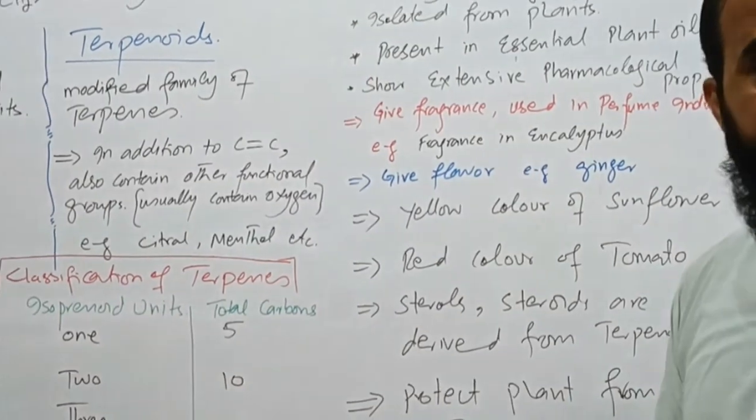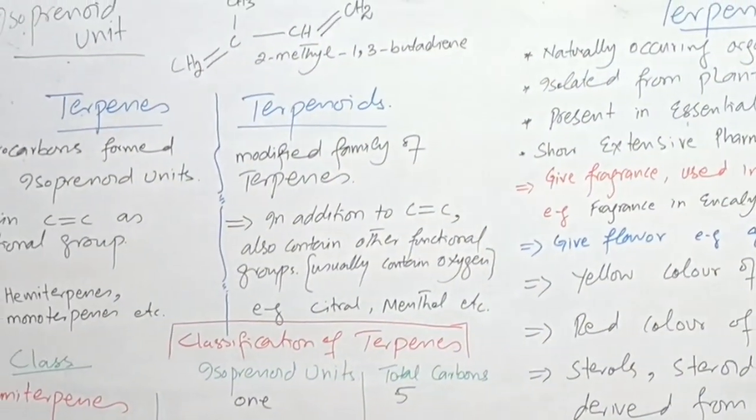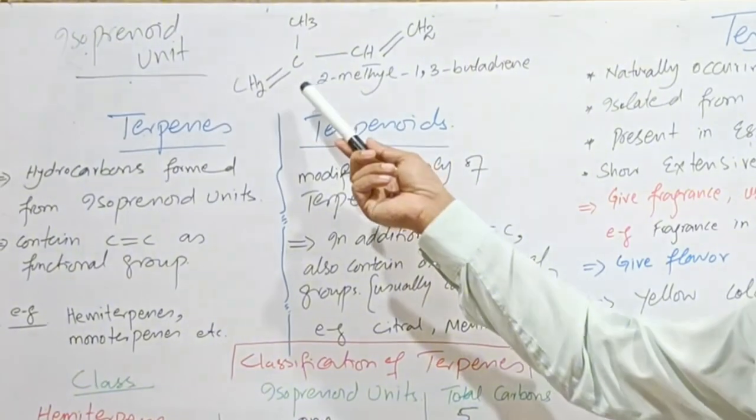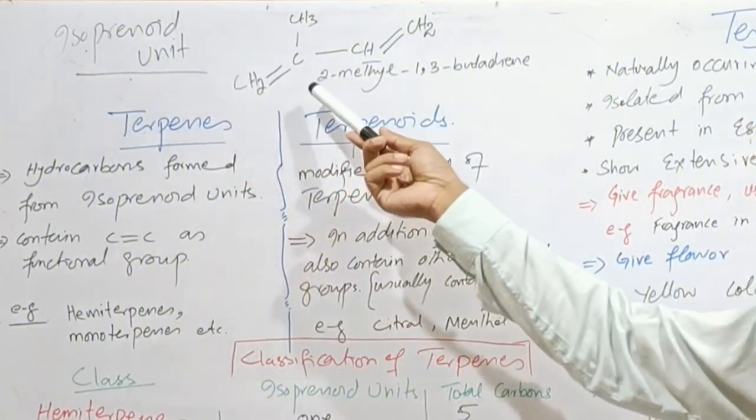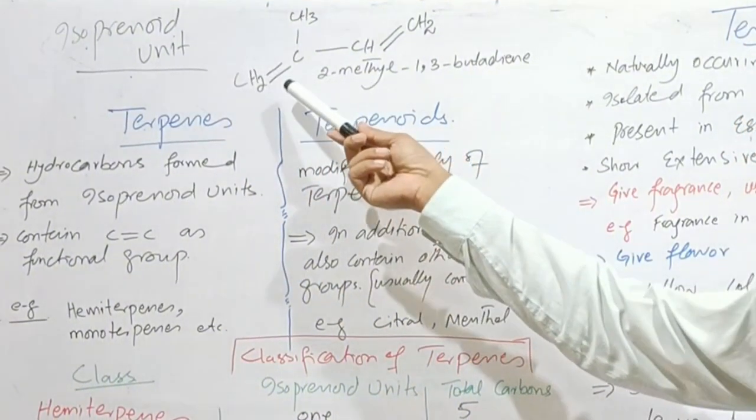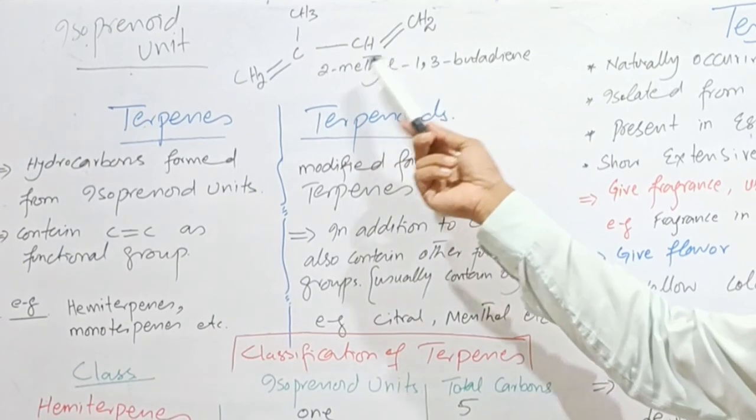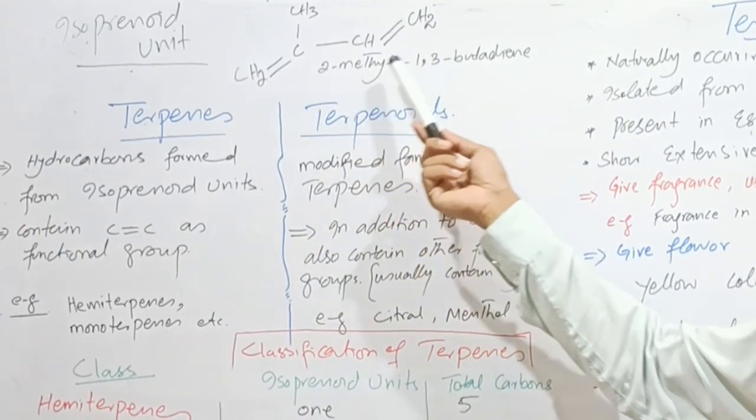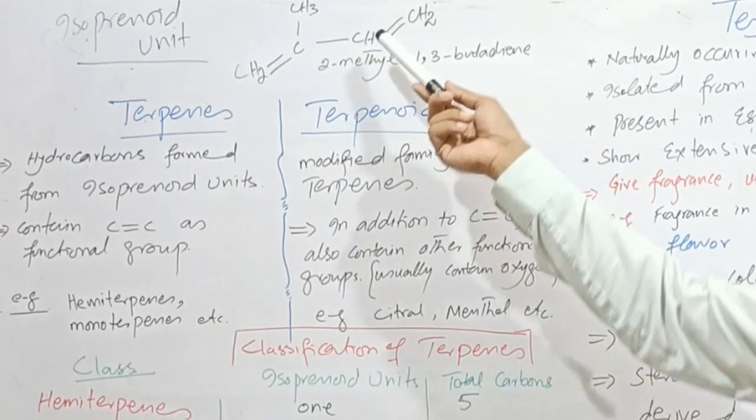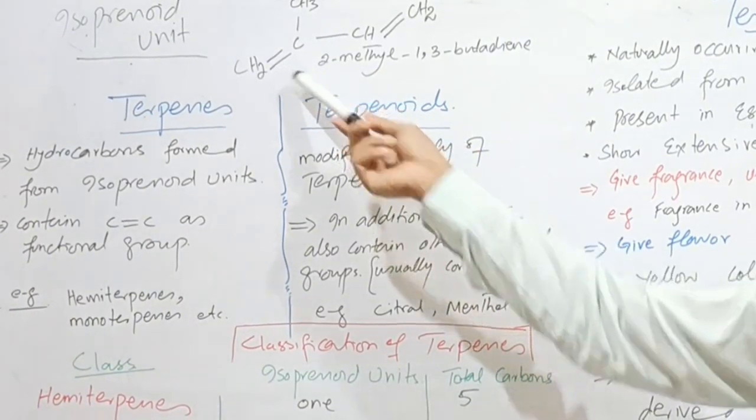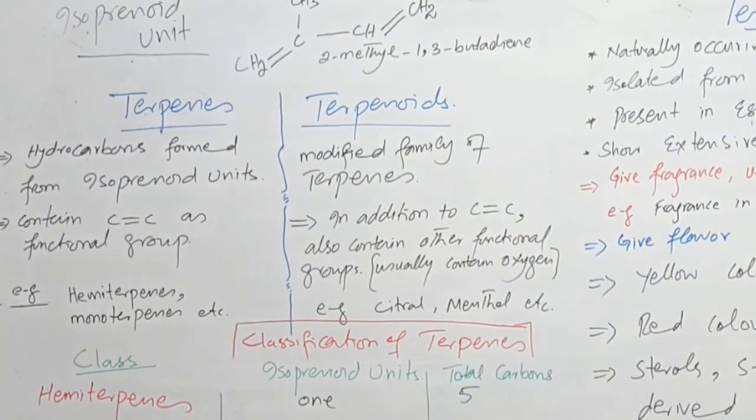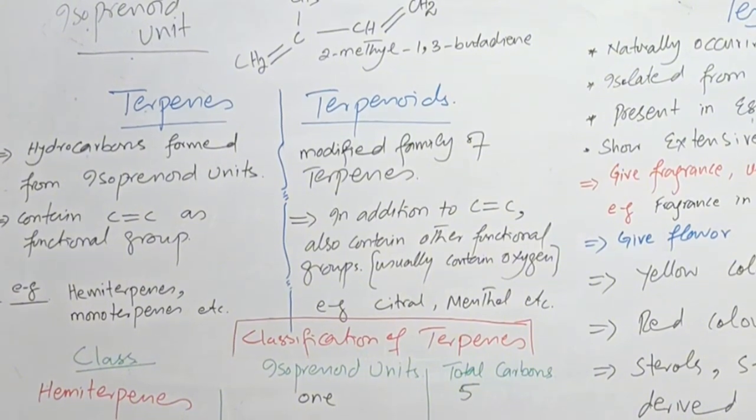Terpenes and terpenoids are formed by the combination of one or more isoprenoid unit. This is five carbon structure. IUPAC name is 2-methyl-1,3-butadiene. This is the repeating unit or the basic structural unit of the terpenes as well as terpenoids.